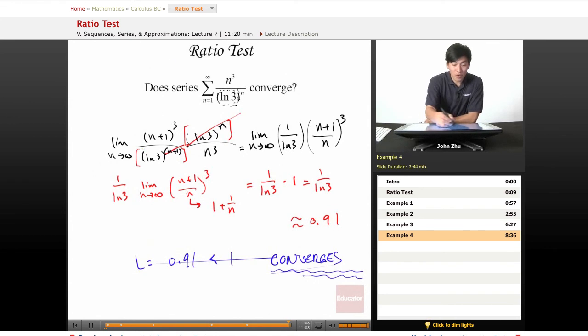So that was an overview of the ratio test, which makes up the big chunk of our BC exam convergence tests of series. So thanks for watching educator.com. We will see you in the next.